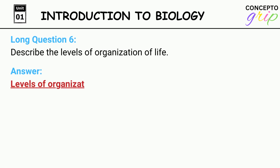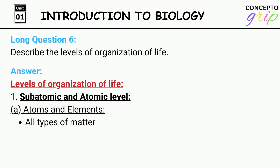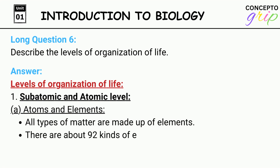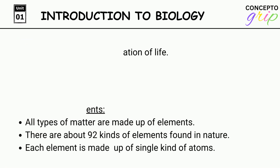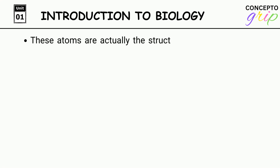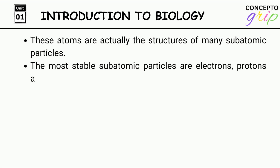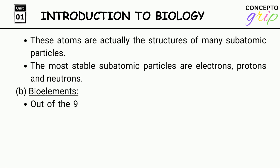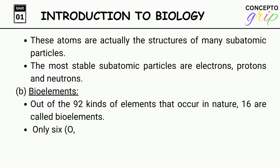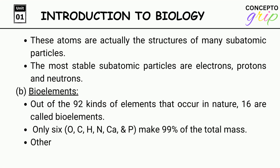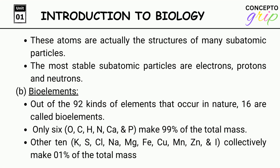Long question 6: Describe the levels of organization of life. Answer. Level 1 — Subatomic and atomic level. All types of matter are made up of elements. There are about 92 kinds of elements found in nature, each made up of a single kind of atom. These atoms are structures of subatomic particles; the most stable are electrons, protons, and neutrons. Bioelements: Out of 92 elements, 16 are called bioelements. Six — oxygen, carbon, hydrogen, nitrogen, calcium, and phosphorus — make 99% of total mass. Other ten — potassium, sulfur, chlorine, sodium, magnesium, iron, copper, manganese, zinc, and iodine — collectively make 0.1% of total mass.